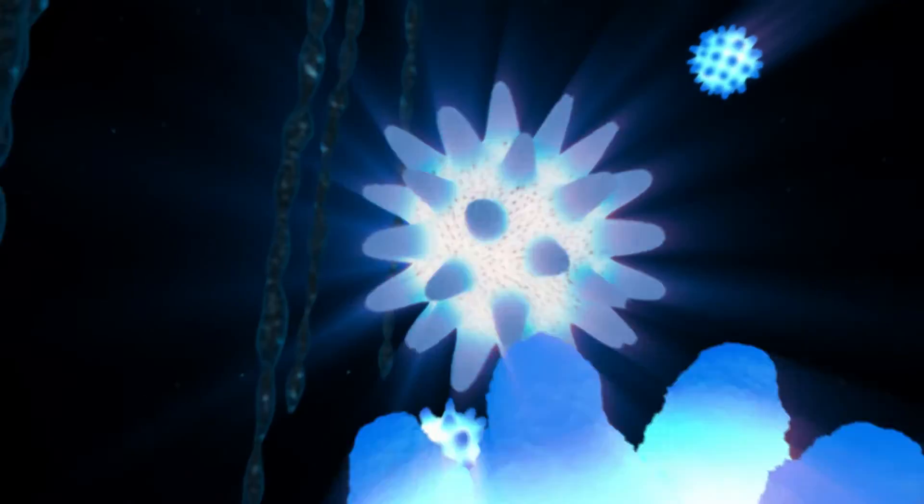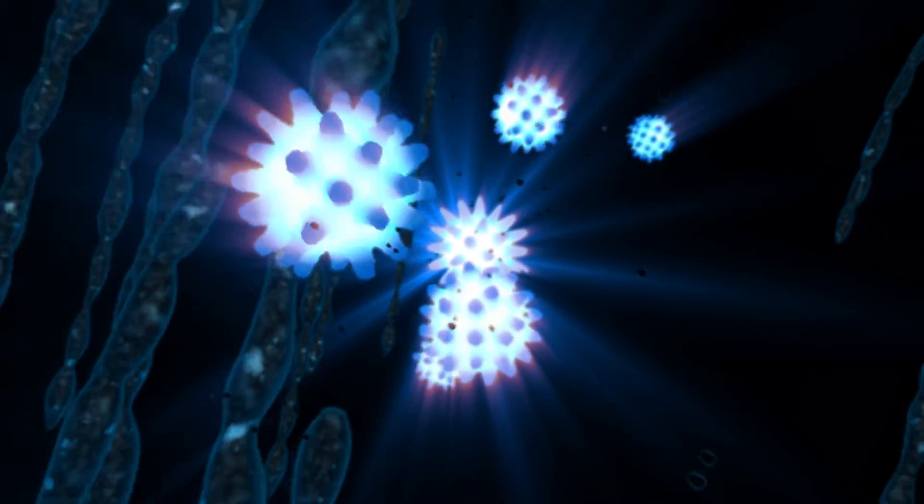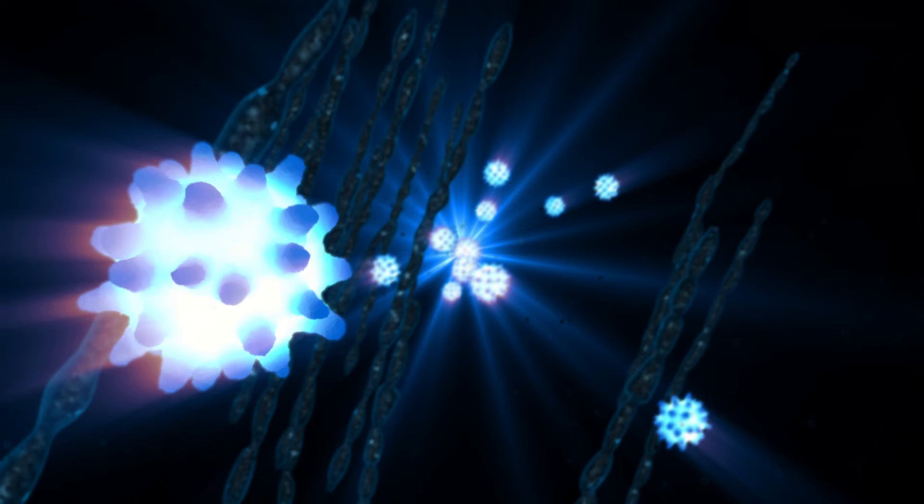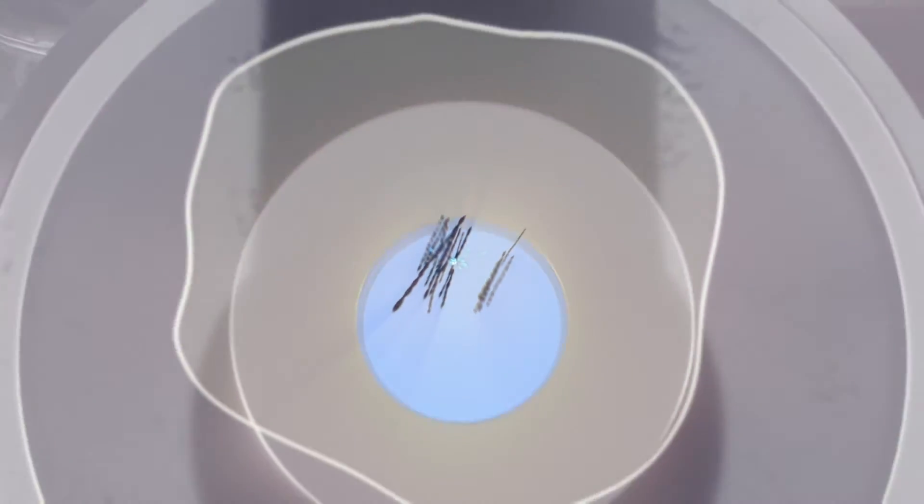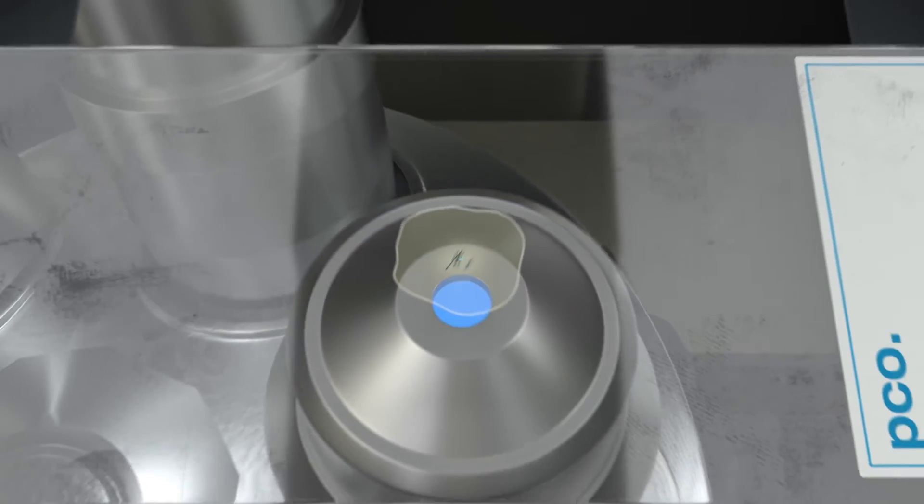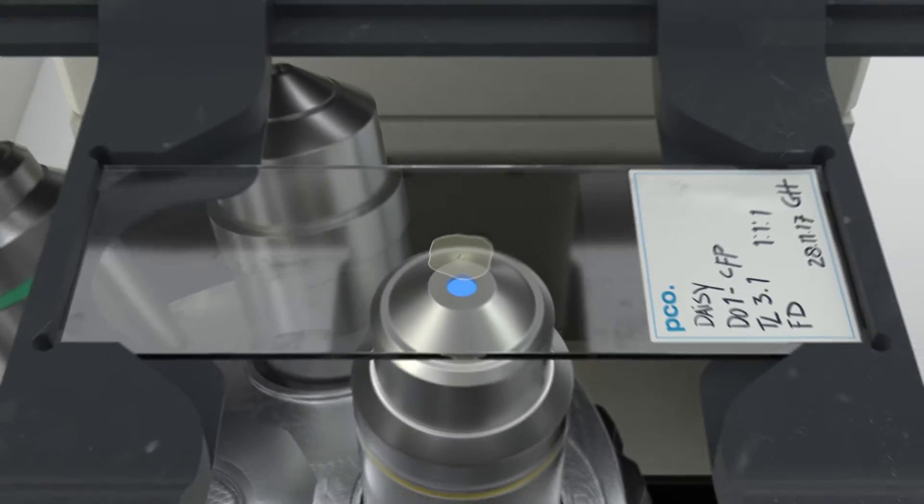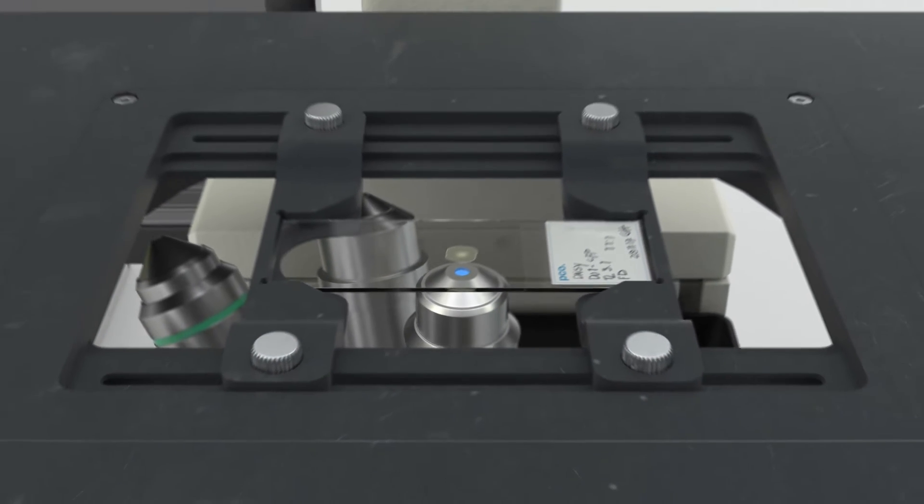Fluorescence lifetime imaging or FLIM in the time and frequency domain. The differences in fluorescence lifetimes in luminophores can be used as an imaging technique called FLIM. This can be achieved both in the time and the frequency domain.